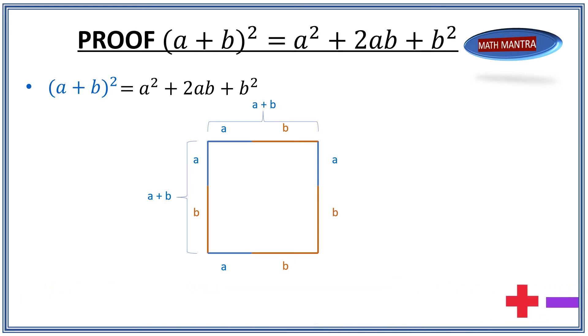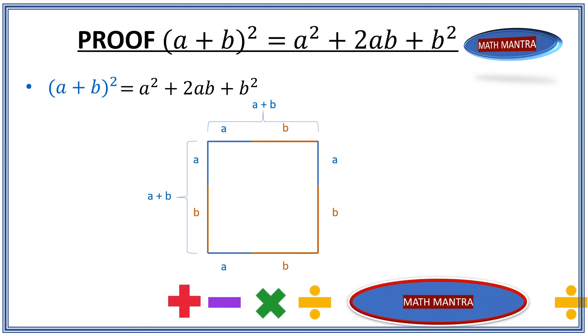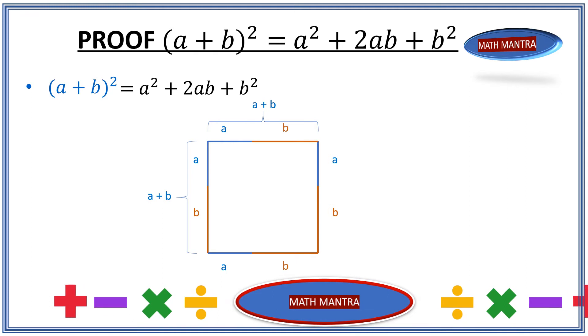So let's divide this square a plus b into easier squares and rectangles. Let's start with the left top corner. As you can see, the line segment shown in blue has the length of a.